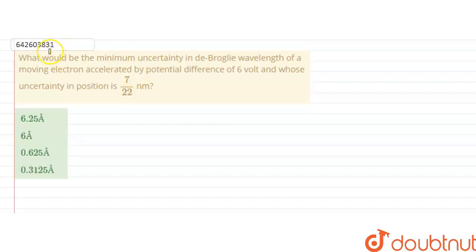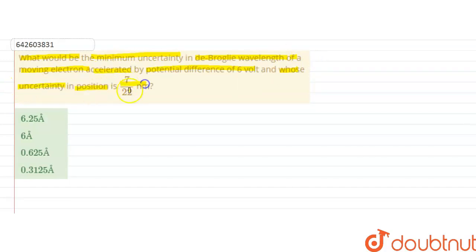Hello students, the question is: what would be the minimum uncertainty in the de Broglie wavelength of a moving electron accelerated by a potential difference of 6 volts and whose uncertainty in position is 7 by 22 nanometers? So in this question, we have to find out the minimum uncertainty in the de Broglie wavelength when an electron is accelerated by a potential difference of 6 volts and whose uncertainty in position is 7 by 22 nanometers.